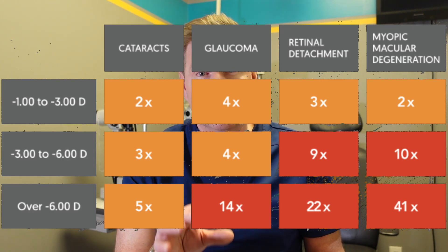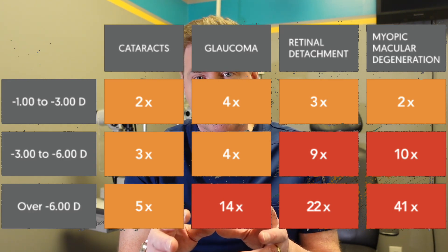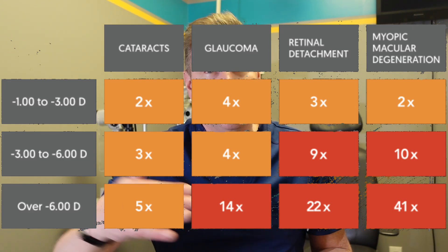A lot of these conditions may not develop or increase in risk until they are much older — like when they're in their 50s, 60s, and 70s. But if you can act now to reduce the risk for having those conditions when they're an adult, you should probably act now.